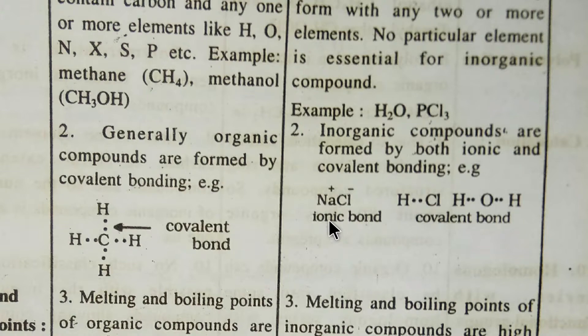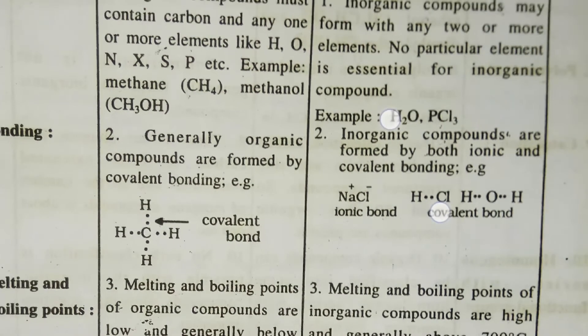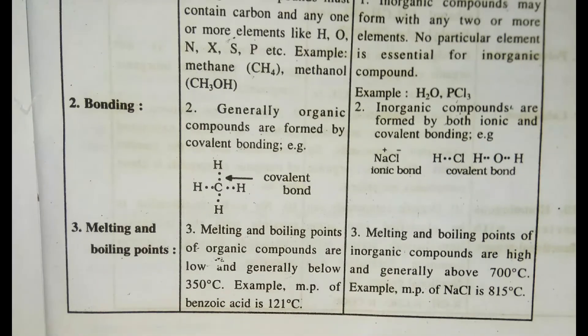In sodium chloride, we see that it has an ionic bond. On the other hand, in HCl and water, we see covalent bonds. Our third point is melting and boiling points.